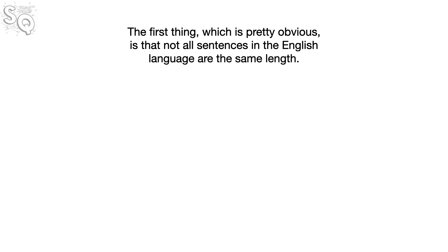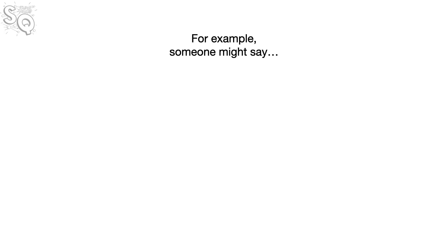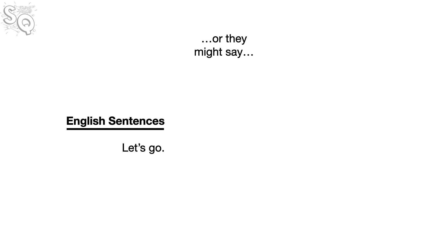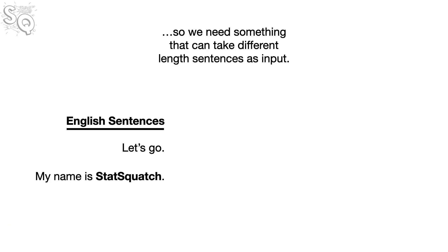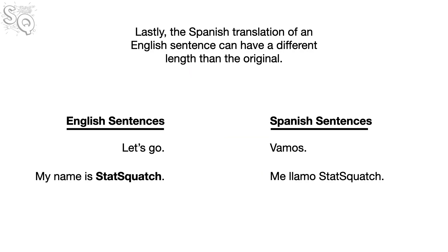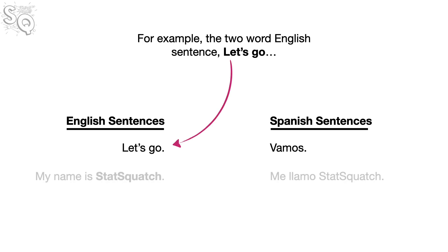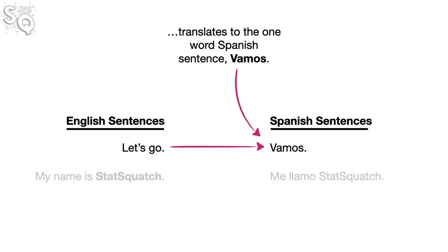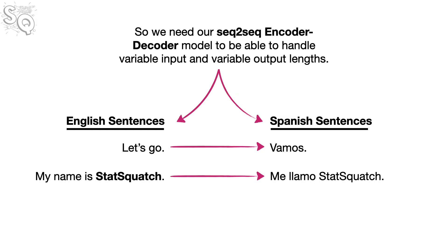The first thing, which is pretty obvious, is that not all sentences in the English language are the same length. Likewise, not all Spanish sentences are the same length, so we need something that can generate different length sentences as output. Lastly, the Spanish translation of an English sentence can have a different length than the original. For example, the two-word English sentence 'Let's go' translates to the one-word Spanish sentence 'Vamos.' So we need our seq-to-seq encoder-decoder model to handle variable input and variable output lengths.